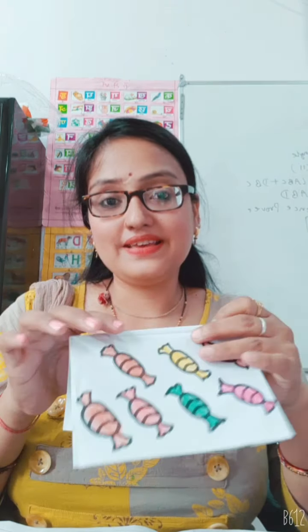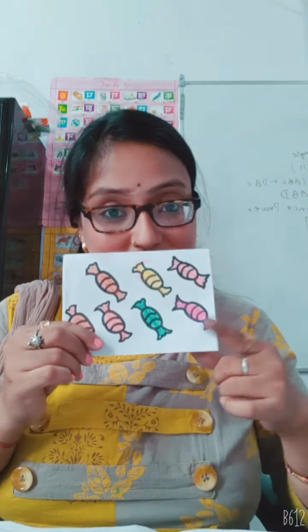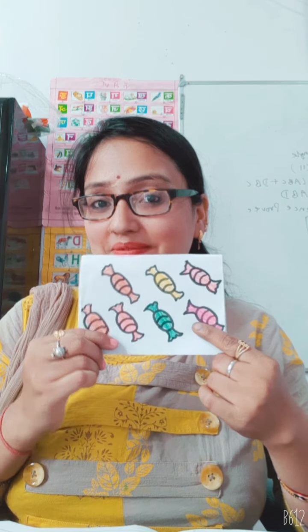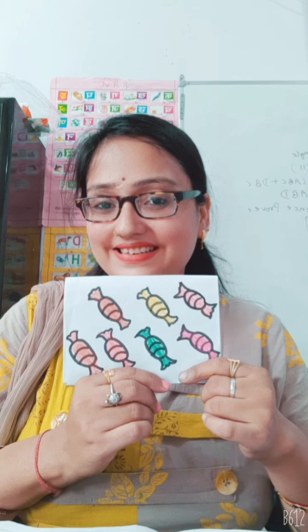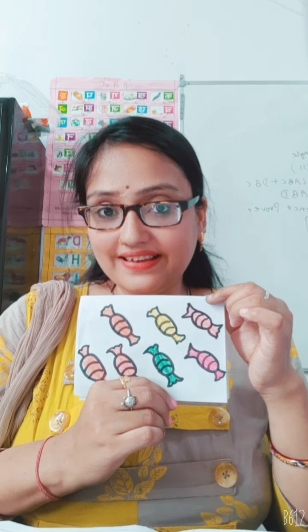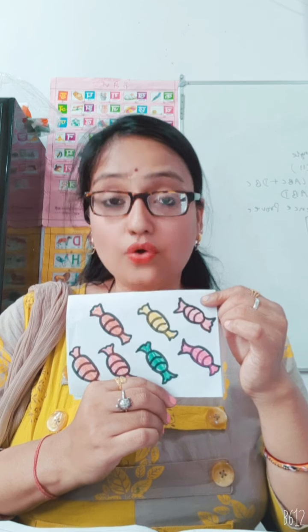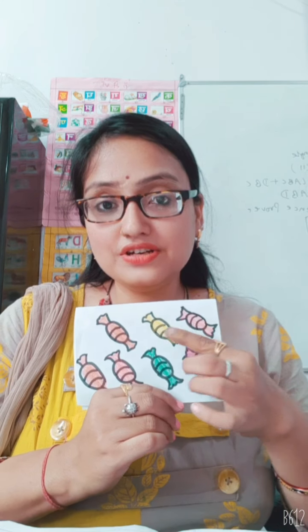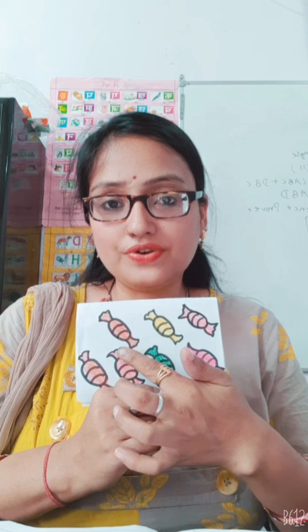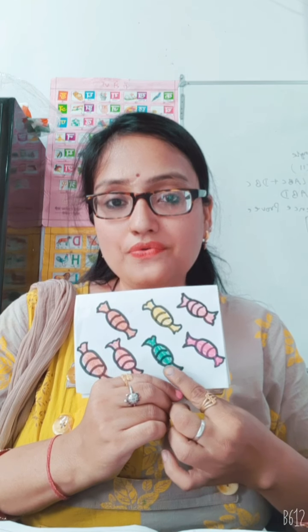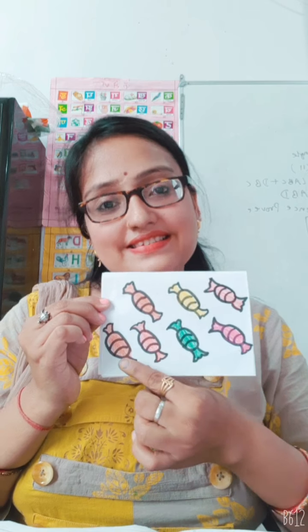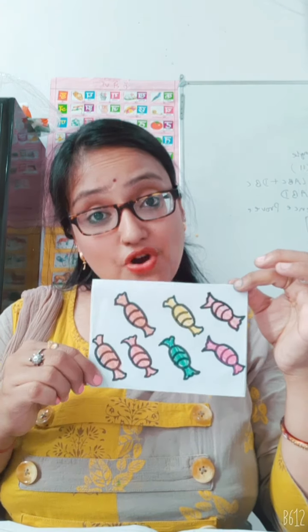And next picture is... Do you know what picture is this? Yes, toffees. How many toffees are there kids? We will count with me: 1, 2, 3, 4, 5, 6, 7. Here is 7 toffees.